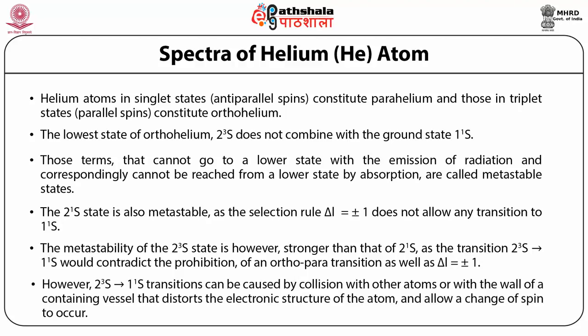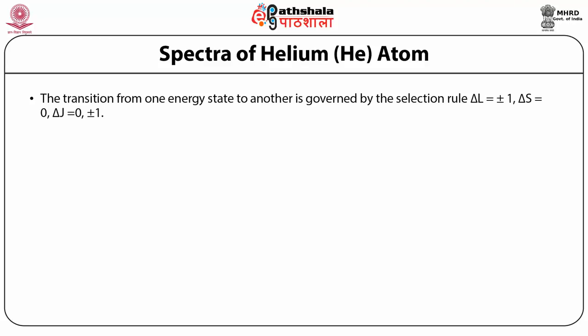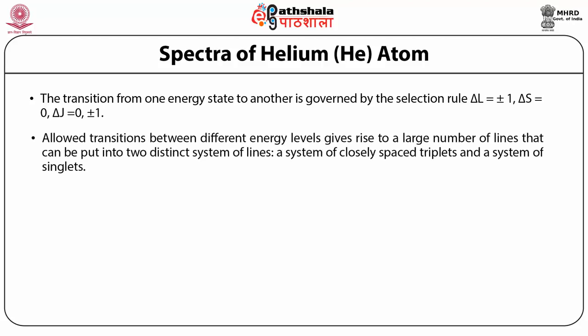However, 2³S to 1¹S transitions can be caused by collision with other atoms or with the wall of a containing vessel, which distorts the electronic structure and allows a change of spin to occur. The transition from one energy state to another is governed by selection rules: ΔL = ±1, ΔS = 0, ΔJ = 0, ±1. Allowed transitions between different energy levels give rise to a large number of lines that can be put into two distinct systems: a system of closely spaced triplets and a system of singlets.